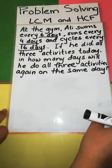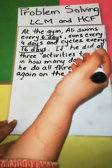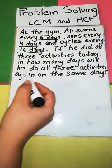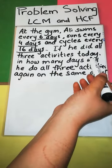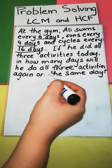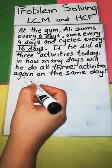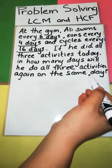At the gym, Ali swims every 6 days, runs every 4 days and cycles every 16 days. If he had all 3 activities today, in how many days will he do all 3 activities again on the same day?